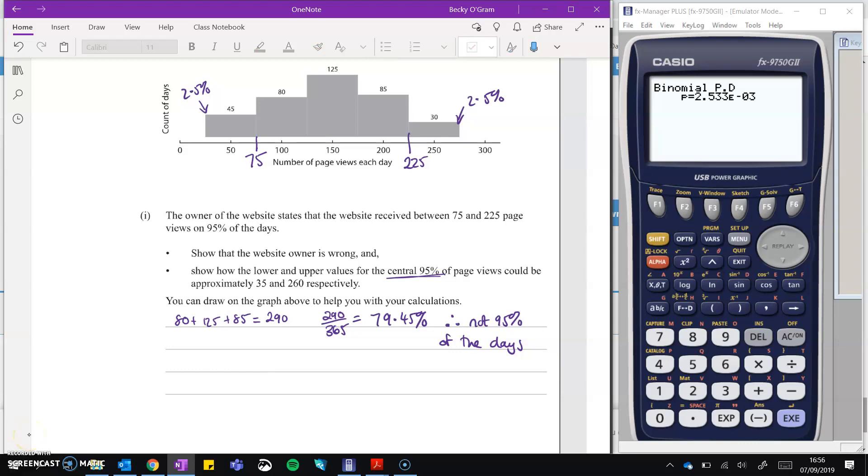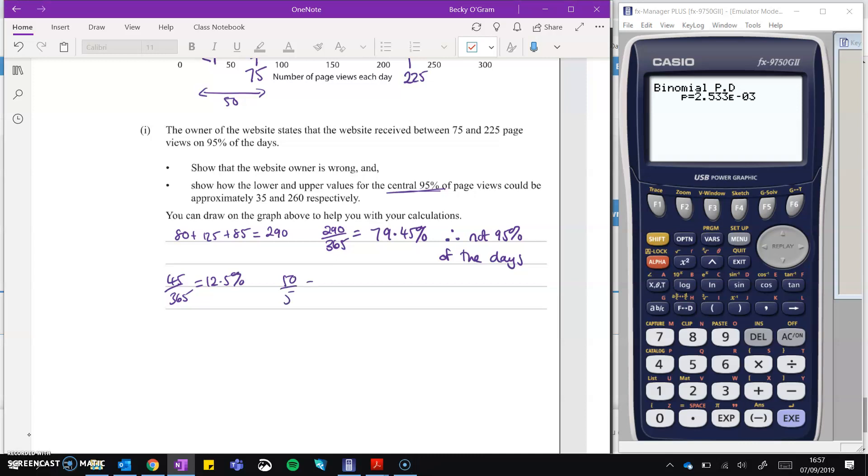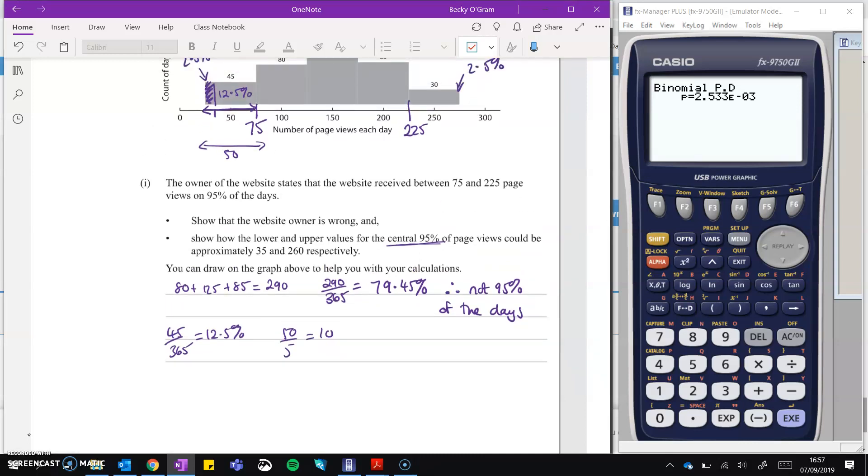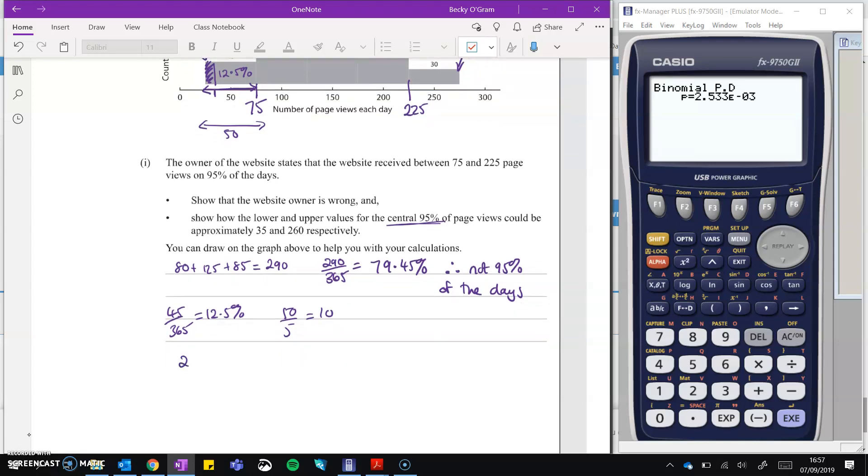So we want to find where's the top 2.5% and the bottom 2.5%. And then the central 95% would be inside of those two sections. So if we start with this section at the bottom end here, 45 out of 365 makes 12.5%. So this little rectangle is worth 12.5%. And we want to just chop off a little bit of it. That'll be 2.5%. Well, 2.5 out of 12.5, that's a fifth. If you divide 12.5 by 5, you'll get 2.5. So if we take this width here and we want to just chop off 1 fifth of it, we can divide that width by 5. So this width from the beginning is 25 up to 75. So that's a distance of 50. We want to divide that by 5. So 50 over 5 is 10. So if we go 10 in from the beginning of our graph, we will have chopped off the beginning 2.5%. So that graph starts at 25, 25 plus 10 equals 35 for the lower limit.